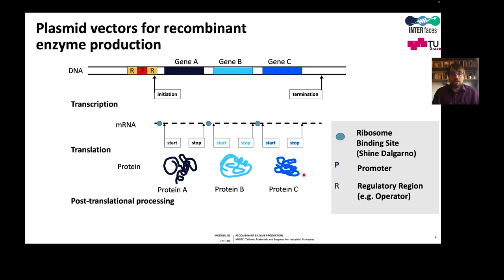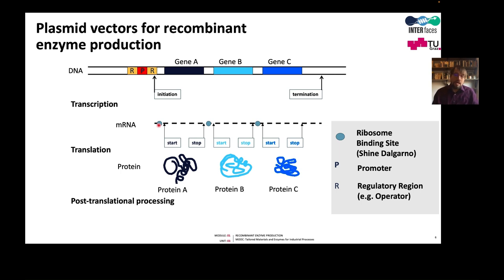The production of the enzyme can be regulated at a transcriptional level and a translational level. The concentration of the mRNA depends on the strength of the promoter, but the mRNA for genes A, B, and C will be the same. However, different ribosome binding sites can be used that are differently recognized by the ribosome, and with this, different concentrations of proteins A and B can be achieved. For this lecture, I want to focus on the promoter and how it can be switched on and switched off.